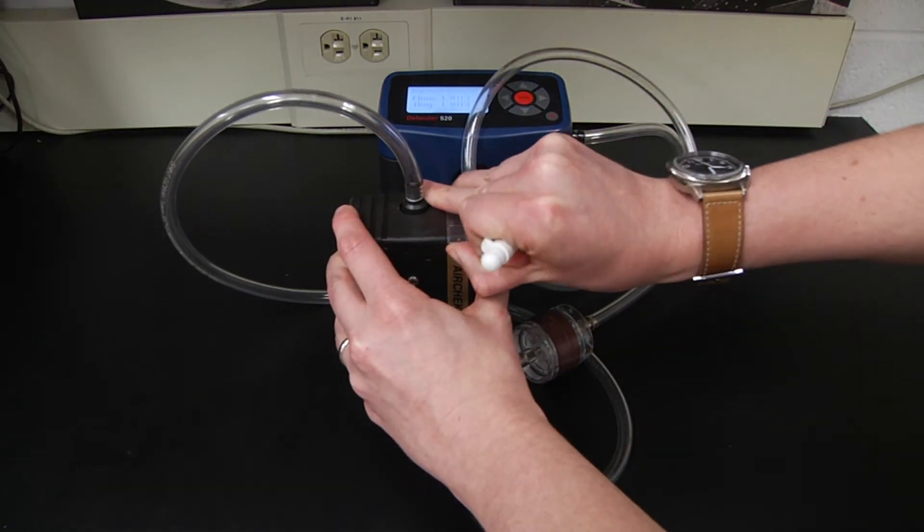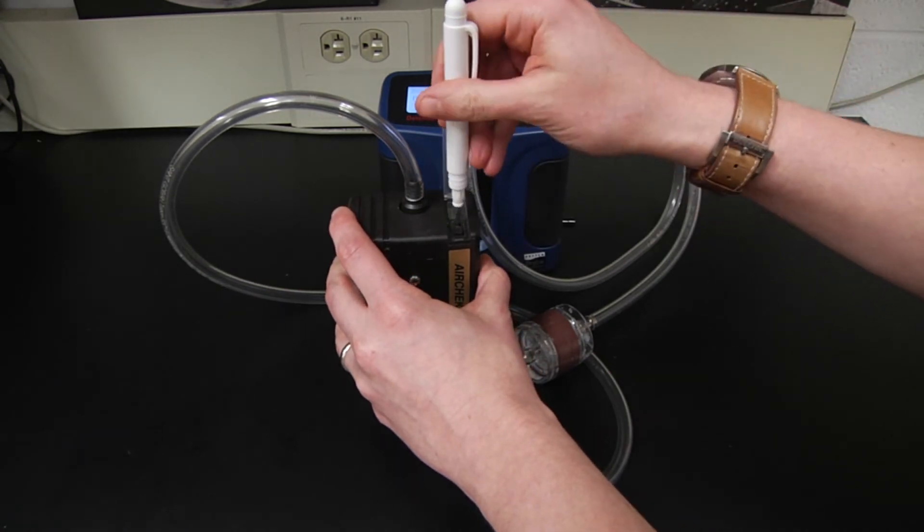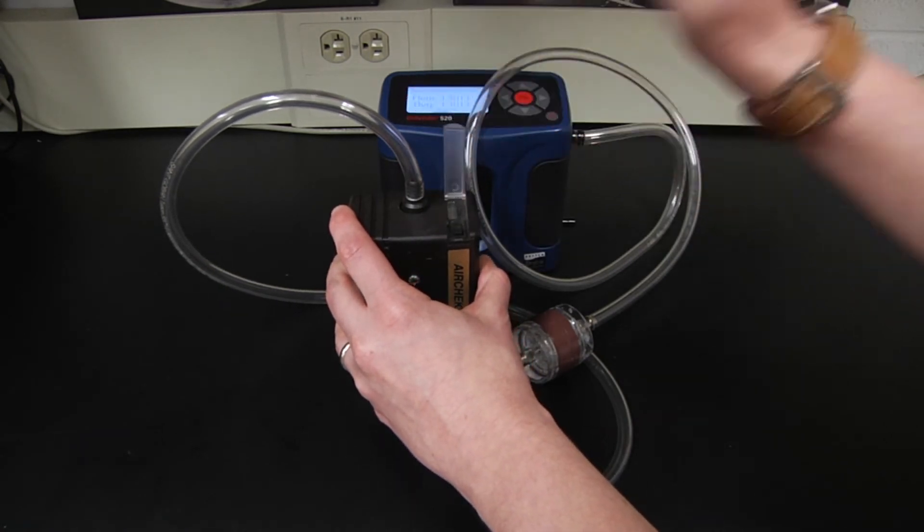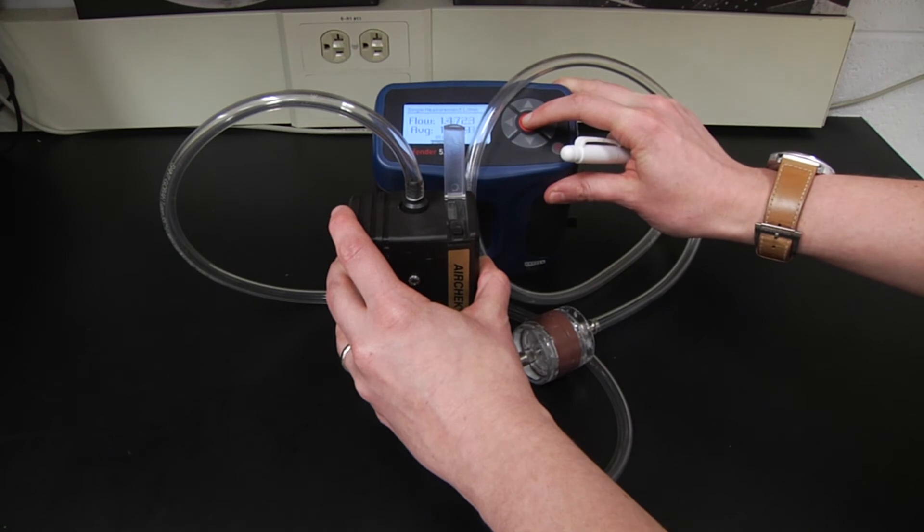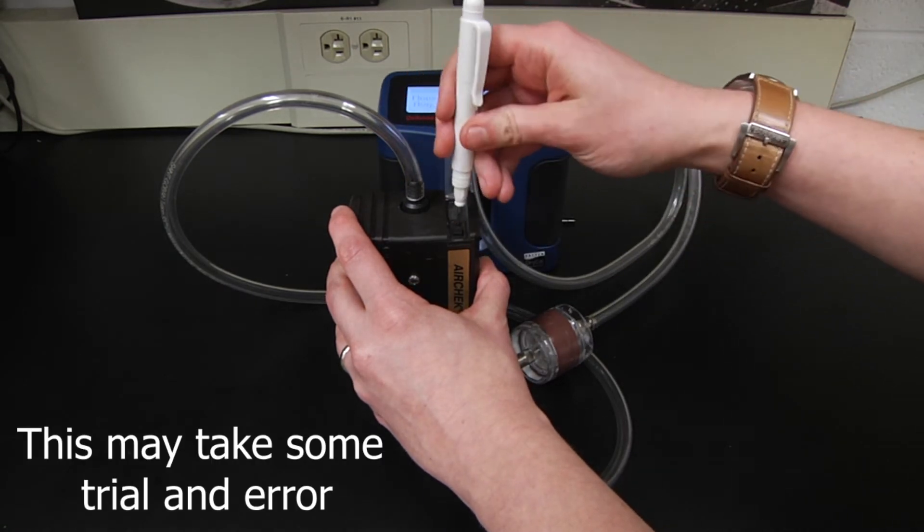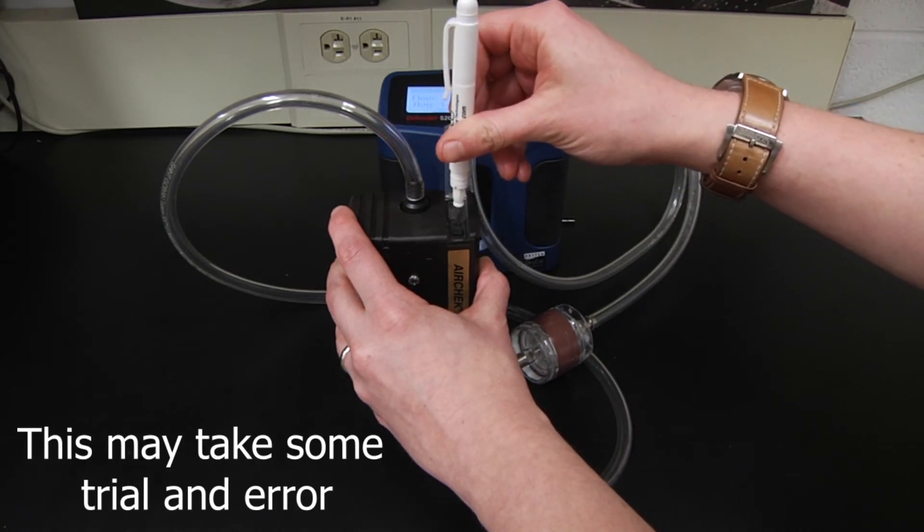Use the screwdriver to adjust the flow rate to the level required based on your sampling time, required sample volume, and approved analytical procedure. In this case, we're using NIOSH method 0500 for total dust.